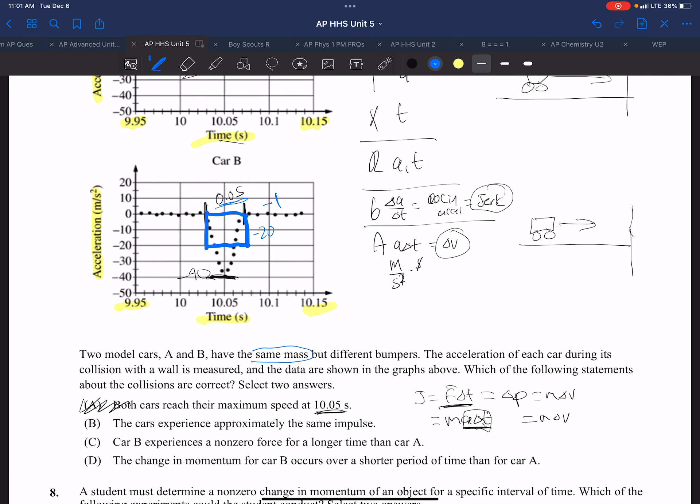We are told they have the same mass, A and B. So the a delta t's are the same and the masses are the same, so that means the impulses are the same, the change in momenta are the same. And if the masses are the same, it means they have the same changes in velocity. So they do experience approximately the same impulse.